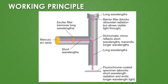The short wavelength light passes through the exciter filter and is directed down into the microscope by the dichromatic mirror. The dichromatic mirror reflects the short wavelength light into the fluorochrome-coated specimen. The purple color line shows the shorter wavelength light. After reaching the specimen, the shorter wavelength radiation is emitted as longer wavelength light, shown here in red color.